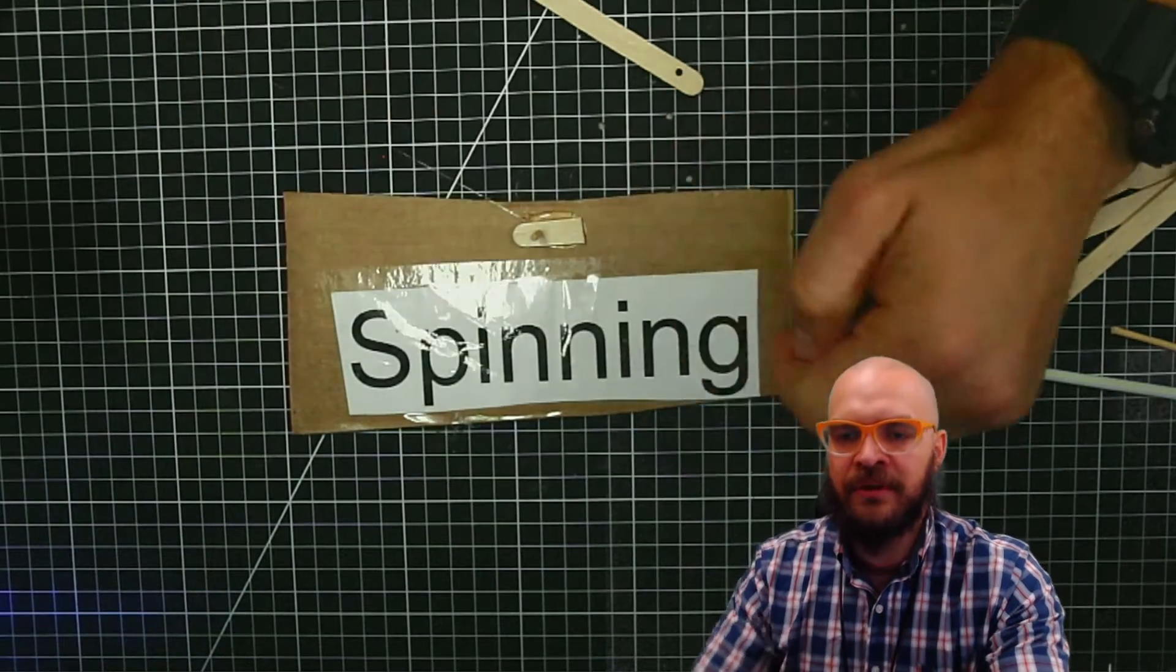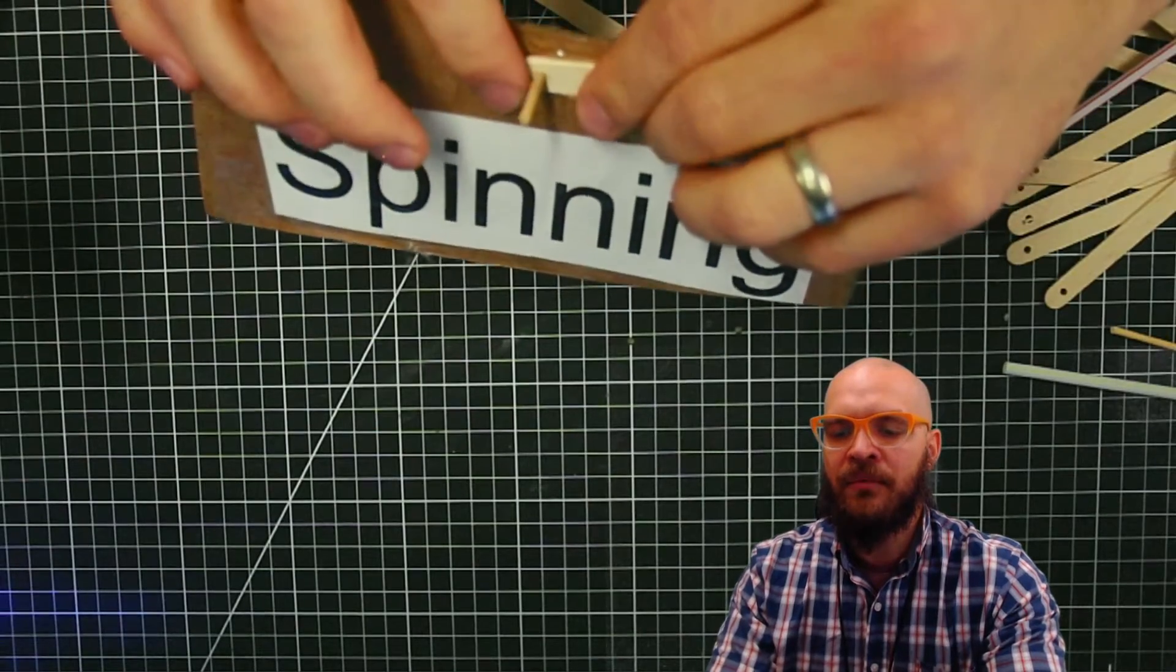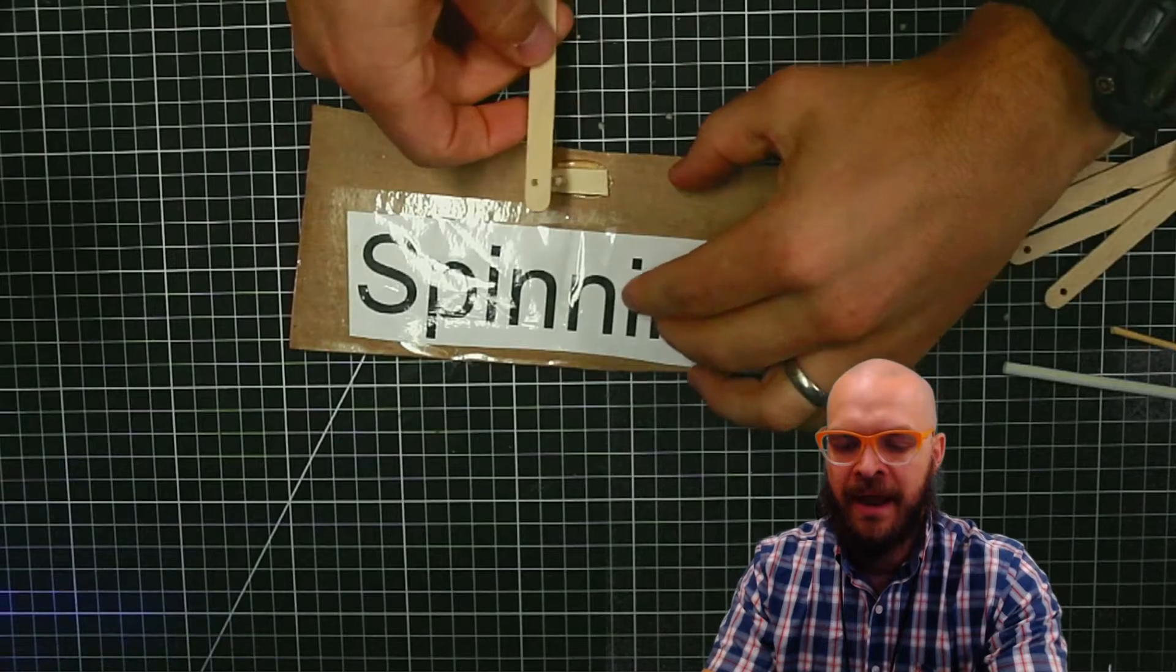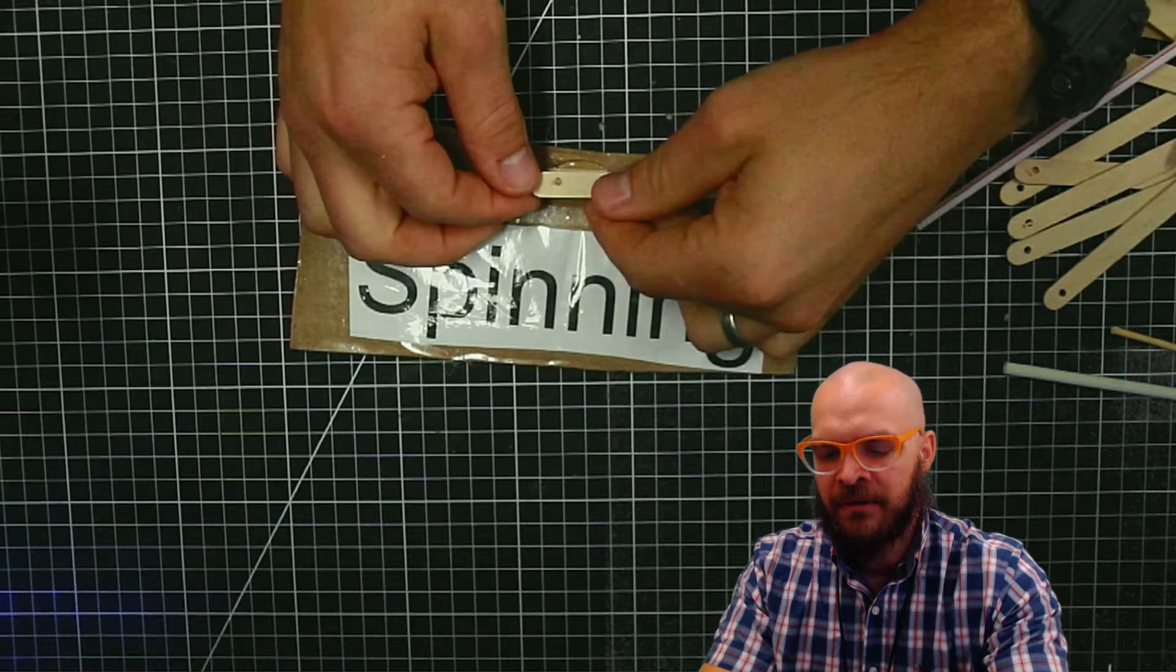So now I've got a really strong post sticking out of my piece of cardboard. Once that cools, I'm going to be able to add the piece that spins. Let me just try to get that to fit on there a little bit.